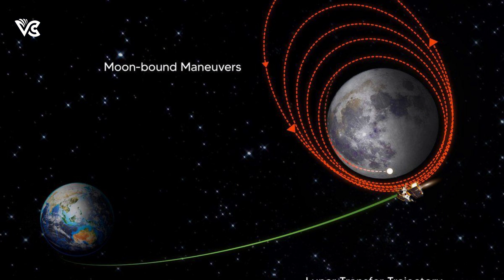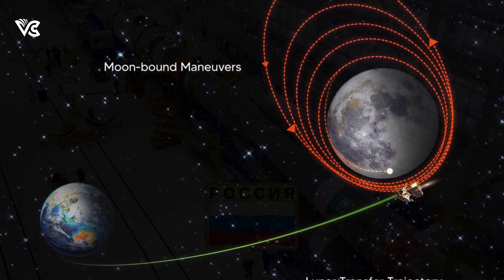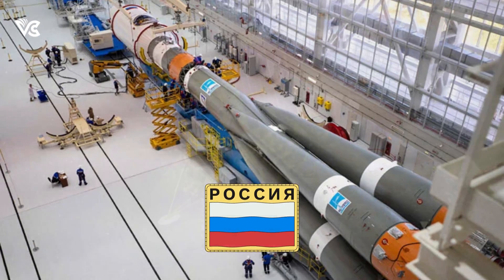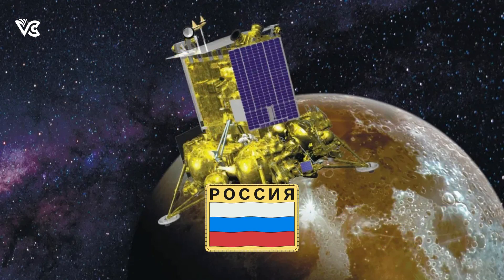These changes in Chandrayaan-3 reflect a shift towards a more failure-tolerant approach, aiming for a safer and more successful lunar landing. But this time it's a race — the Russians are trying to overtake India with the Luna-25 mission. Watch the linked video to know more.